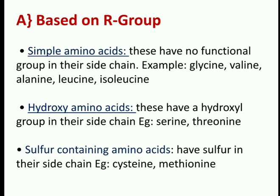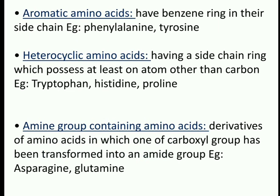The first classification is based on the R group. Simple amino acids have no functional group in their side chain — examples include glycine, valine, alanine, and leucine. Hydroxy amino acids have a hydroxyl (OH) group in their side chain — examples are serine and threonine. Sulfur-containing amino acids have sulfur in their side chain — examples are cysteine and methionine.